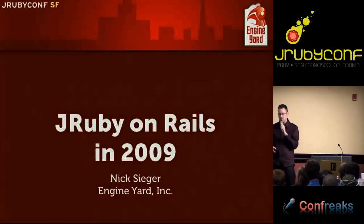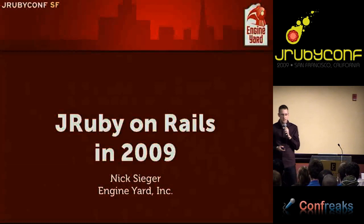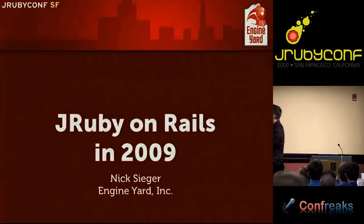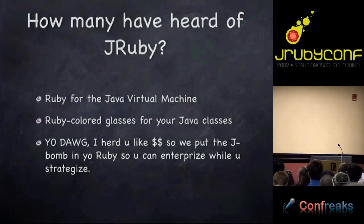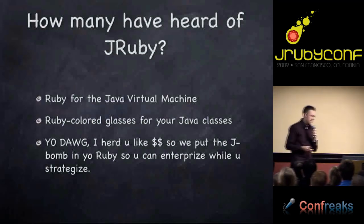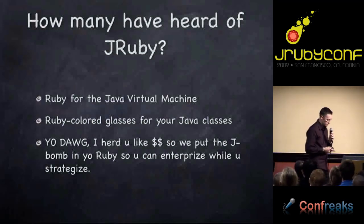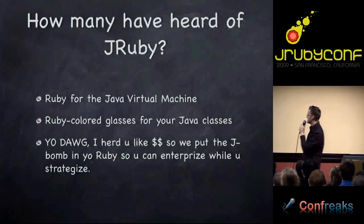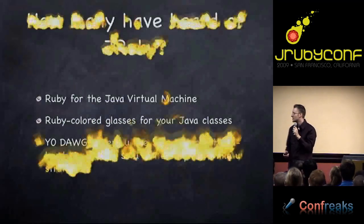JRuby on Rails in 2009. I'm the third developer in engineering. My name is Nick Seeger. How many of you have heard of JRuby? It's a Ruby implementation on top of the Java Virtual Machine. I guess I don't need that slide at this conference.